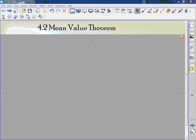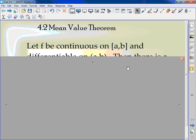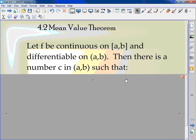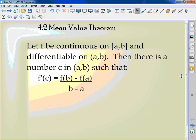Today we're starting 4.2 Mean Value Theorem. Let f be continuous on the interval [a,b] and differentiable on (a,b). Then there is a number c in (a,b) such that f'(c) equals f(b) minus f(a) over b minus a.